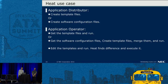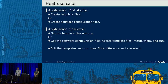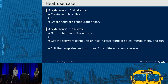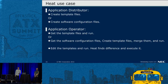So, what is Heat for the actors? Application distributor creates template files, or creates software configuration files. Application operator gets the template files and runs them, or gets the software configuration files, creates template files, matches them, and runs. If it is a template update and run, Heat finds the difference and executes it.